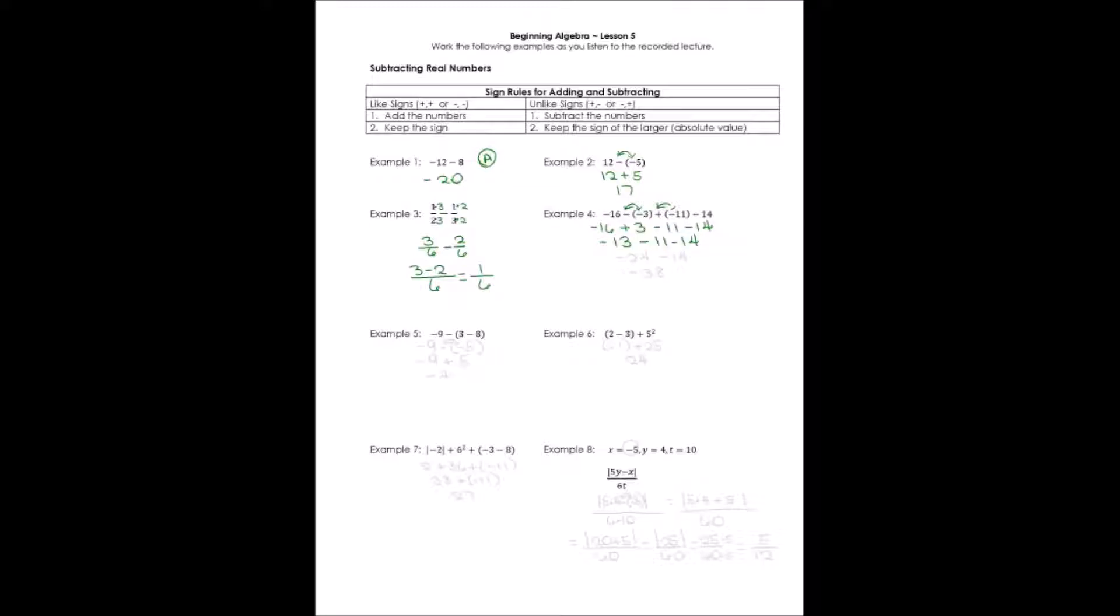Let's do the next two terms, negative 13 minus 11. They have the same sign, so I need to add them together and keep that sign. Then just bring down the minus 14, the negative 14. Now I've got the same sign, so I have to add these together and keep the sign, which was negative, and the answer is negative 38.